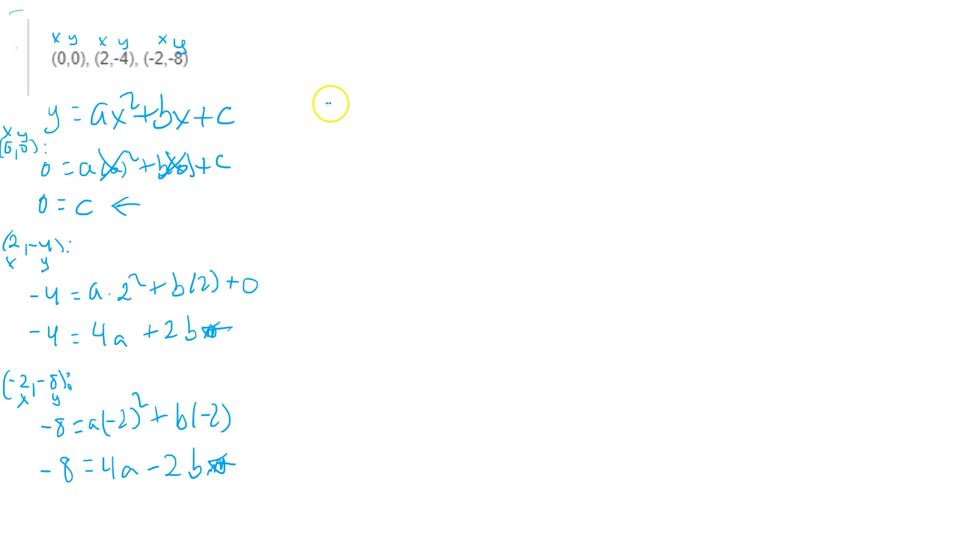So when I do that, I'm going to do that over here. -4 equals 4a plus 2b. And then under it, I'm going to put -8 equals 4a minus 2b. At this point, just add up the equations.